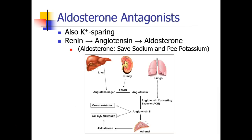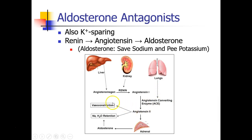Another set of potassium-sparing diuretics are the aldosterone antagonists. This brings us back to the renin-angiotensin-aldosterone axis. It begins with synthesis of angiotensinogen in the liver and renin in the kidney. Renin facilitates conversion of angiotensinogen to angiotensin 1, which is then converted to angiotensin 2 by the angiotensin-converting enzyme — ACE — synthesized in the lungs. Angiotensin 2 causes vasoconstriction and water retention, and also stimulates secretion of aldosterone from the adrenal glands. Aldosterone's job is to save sodium and excrete potassium, so it is involved in sodium and water retention as well as potassium excretion.